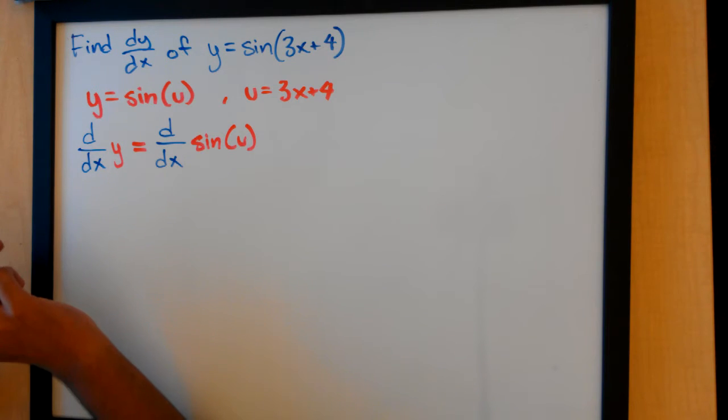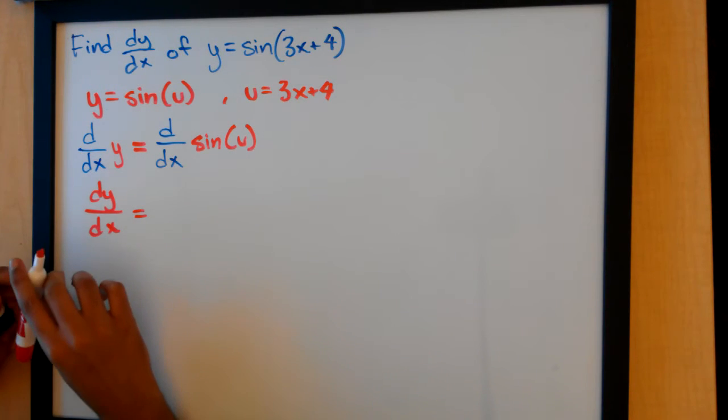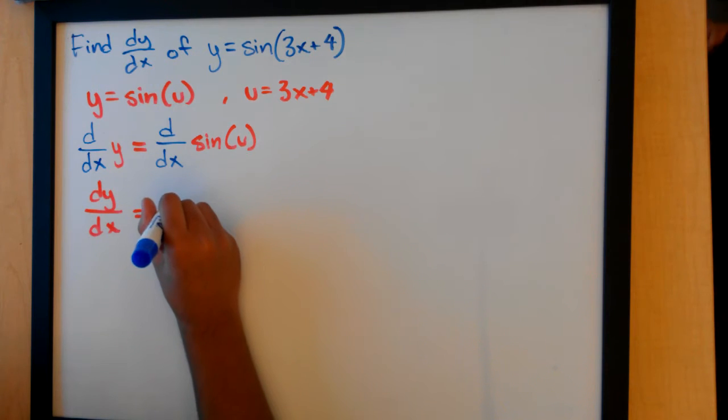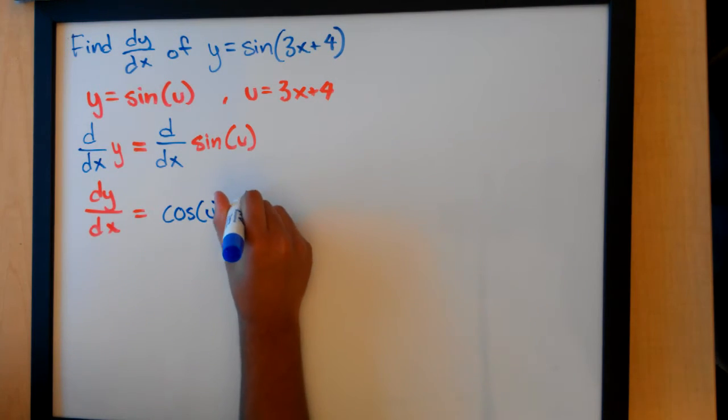And so we get on the left side simply dy over dx, on the right side the derivative of sine u would be, first of all, cosine u, but then we have to multiply by du over dx.